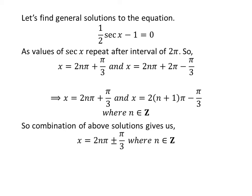Combining the above solutions gives us the general solution of the equation: 2nπ plus or minus π/3, where n is an integer.